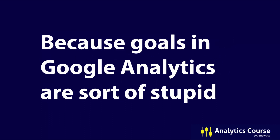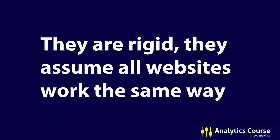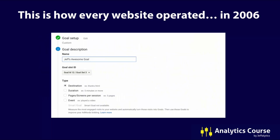Goals in Google Analytics are sort of stupid. And "sort of stupid" is my Minnesota nice way of saying they are very dumb and they haven't changed much over the years and they sort of suck. They're rigid. They assume that all websites work the same way. There's only four options for how you can set up a goal, and those options represent a paradigm of how every website operated back in 2006. You see here there's a destination URL where you put in the URL of a thank you page — who does thank you pages anymore?